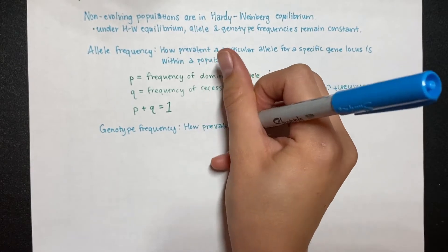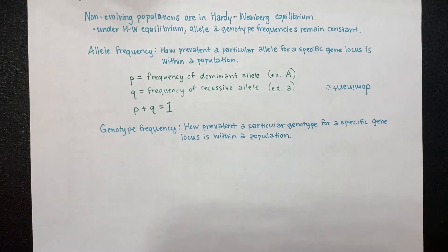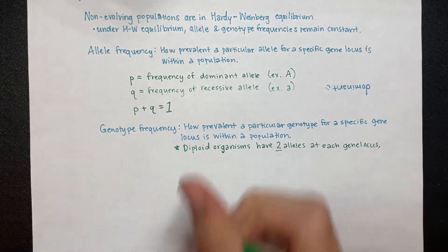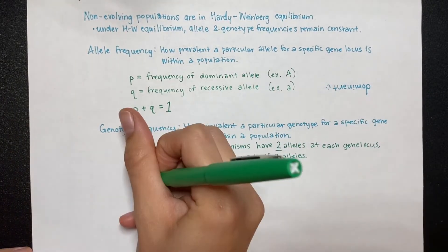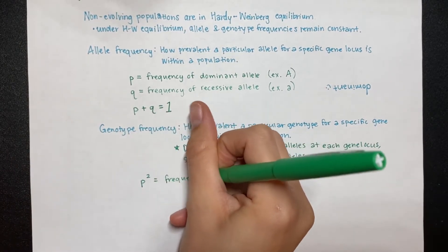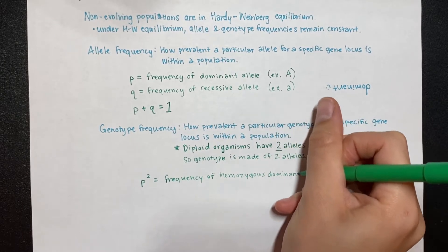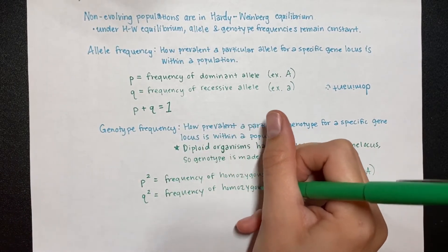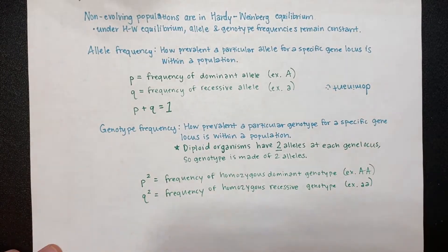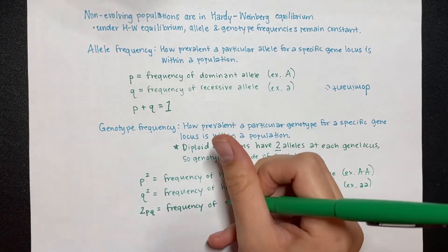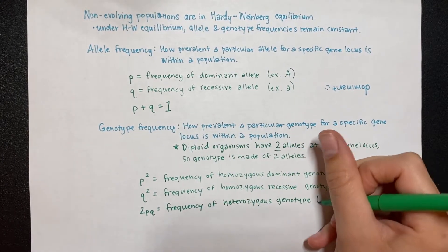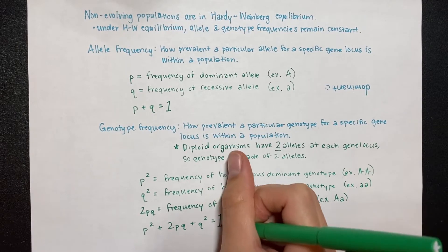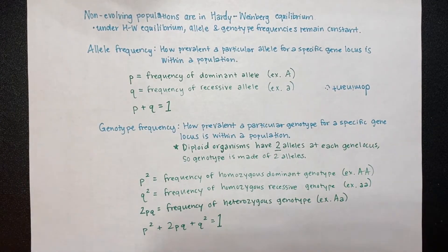Genotype frequency refers to how prevalent a particular genotype for a specific gene locus is within a population. For diploid organisms — and we'll only use diploid organisms with these equations — each individual has two alleles at each gene locus, so their genotype is made of two alleles. The next equation represents genotype frequencies: p-squared represents the frequency of the homozygous dominant genotype like AA, q-squared represents the frequency of the homozygous recessive genotype like aa. In any population, when you add all three terms, you get one: p² + 2pq + q² = 1.